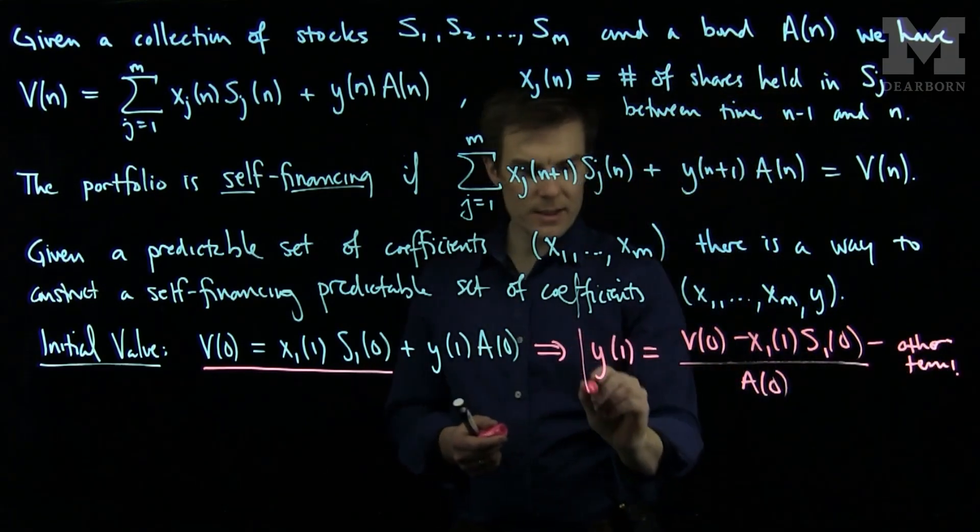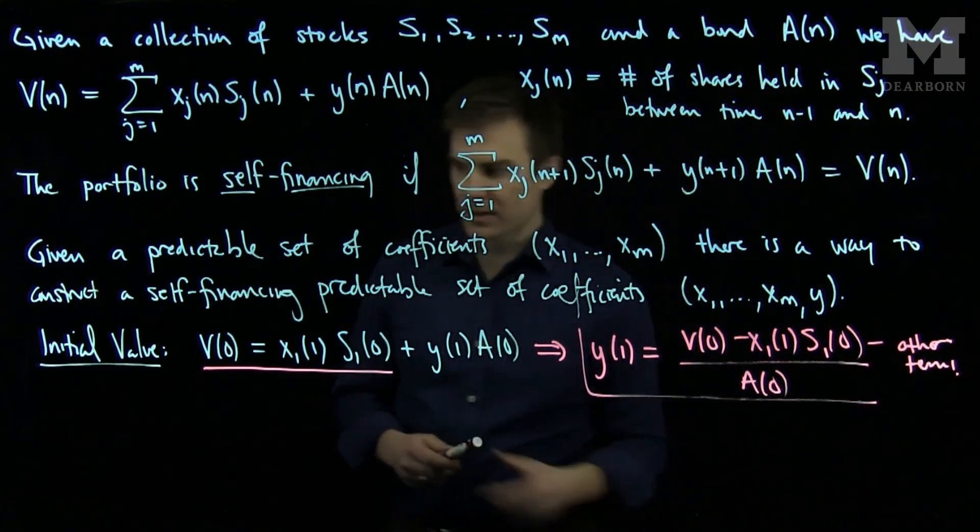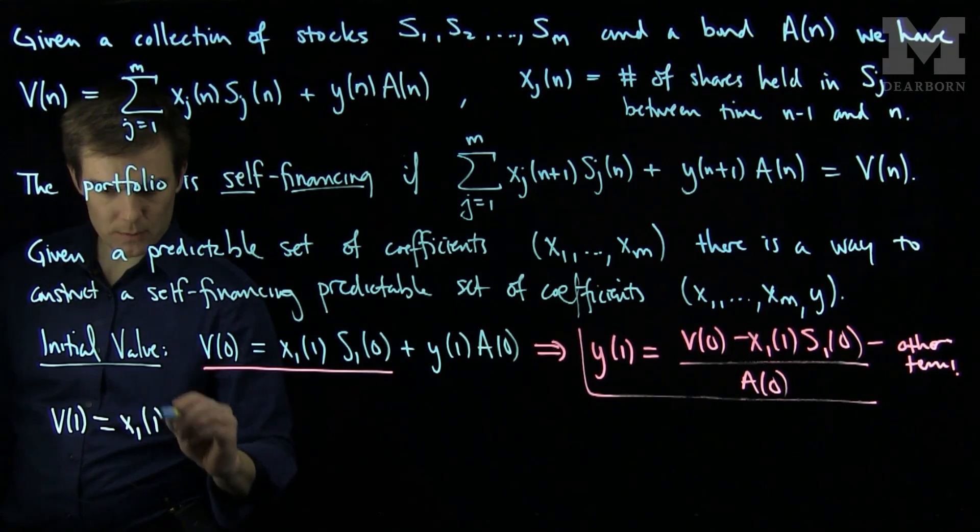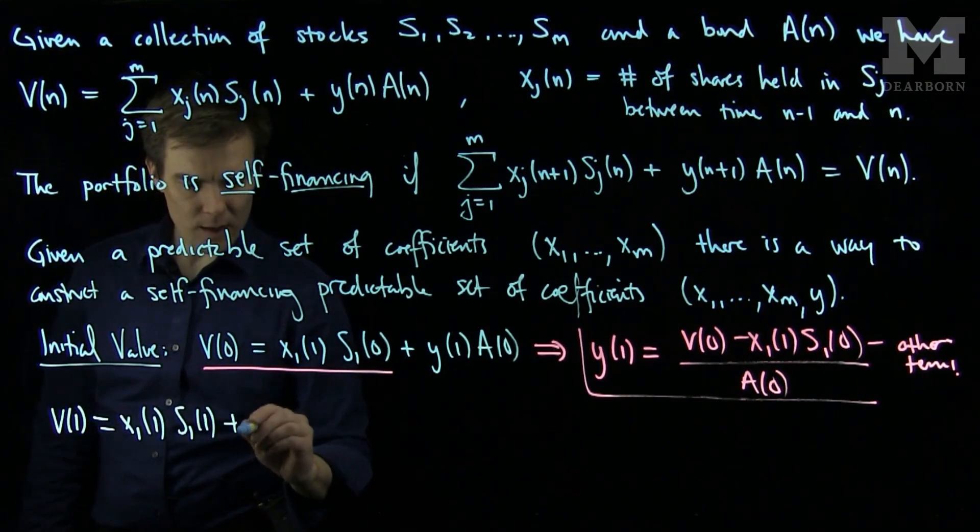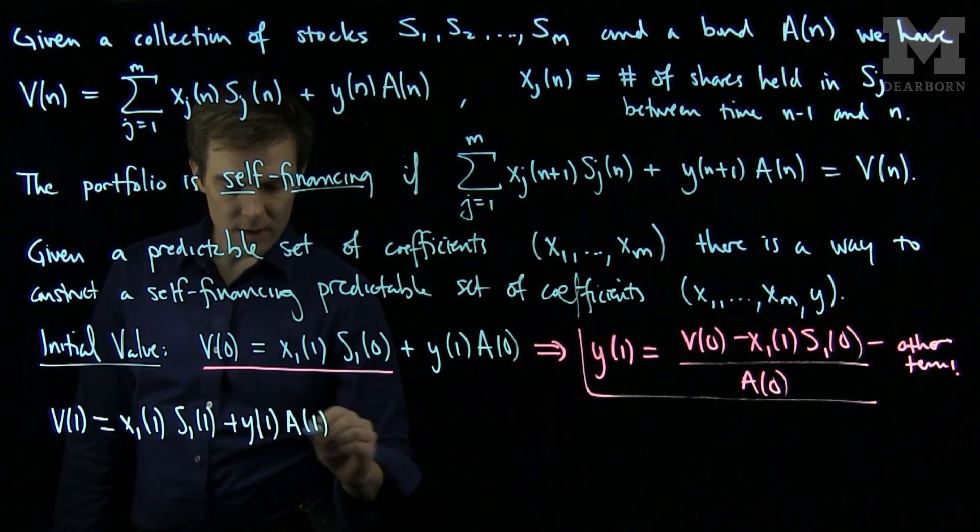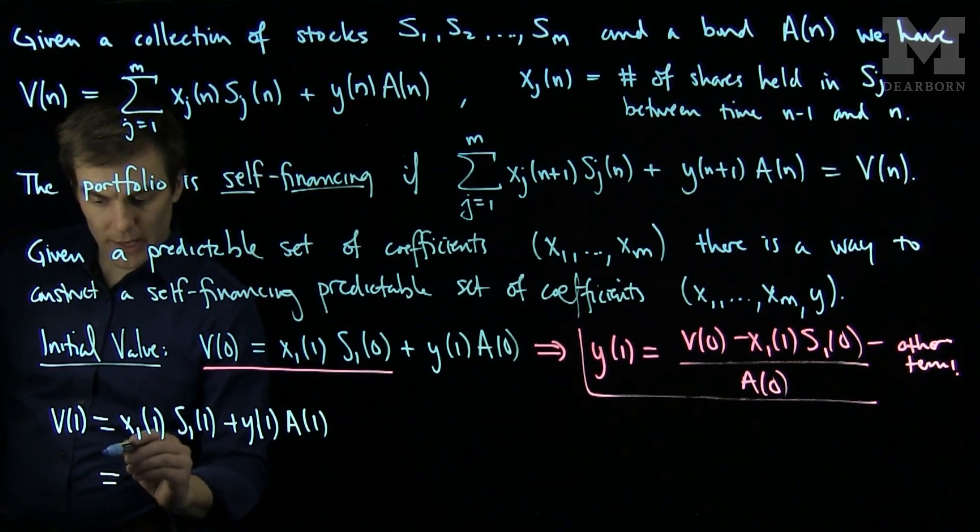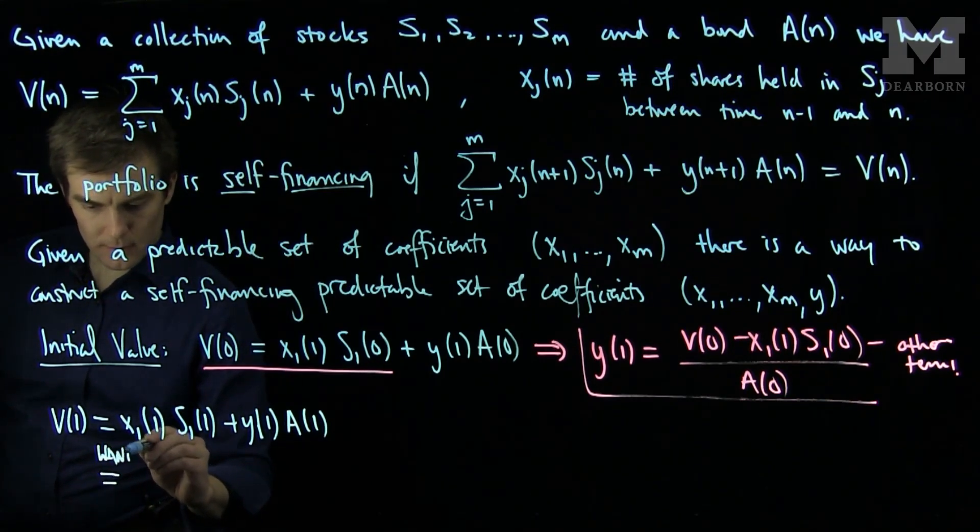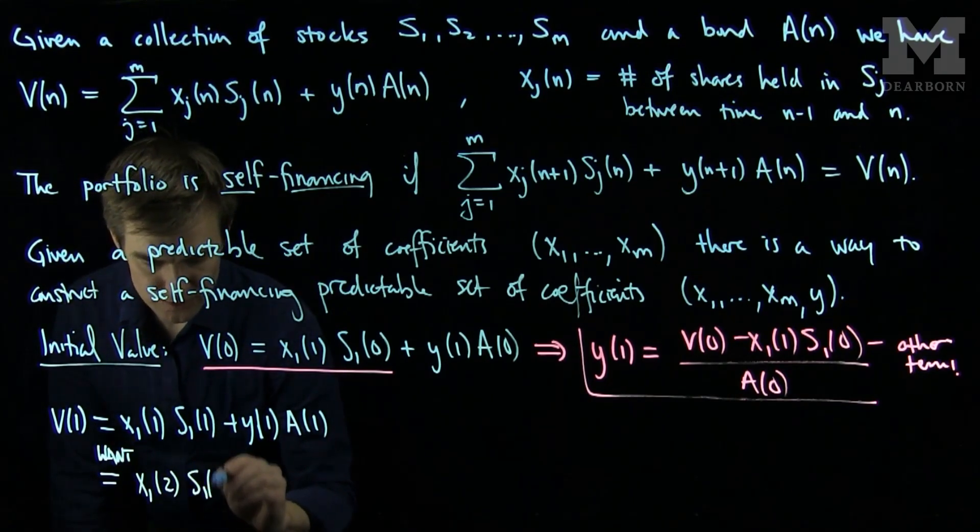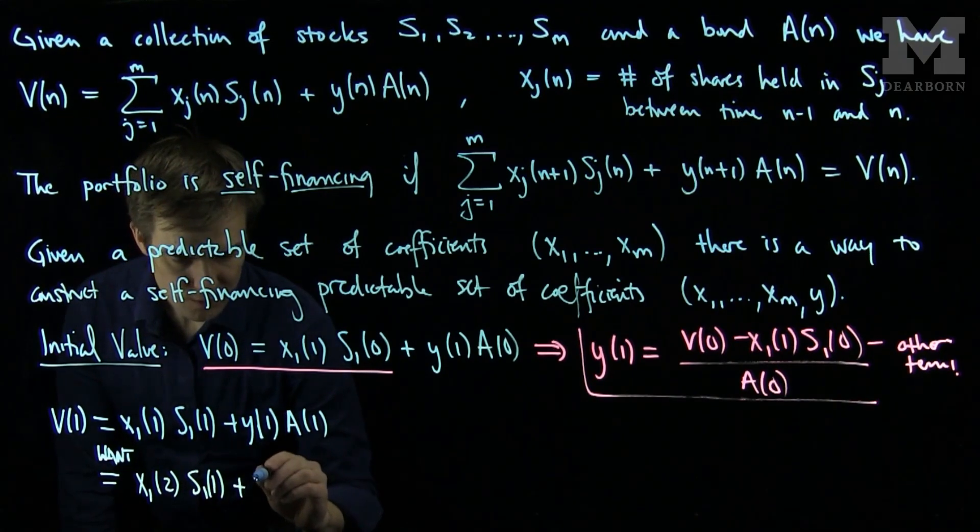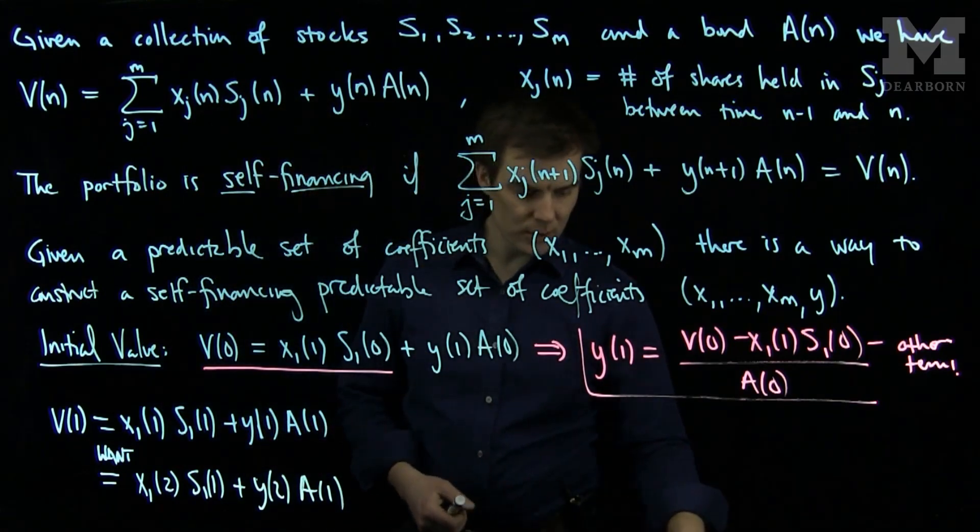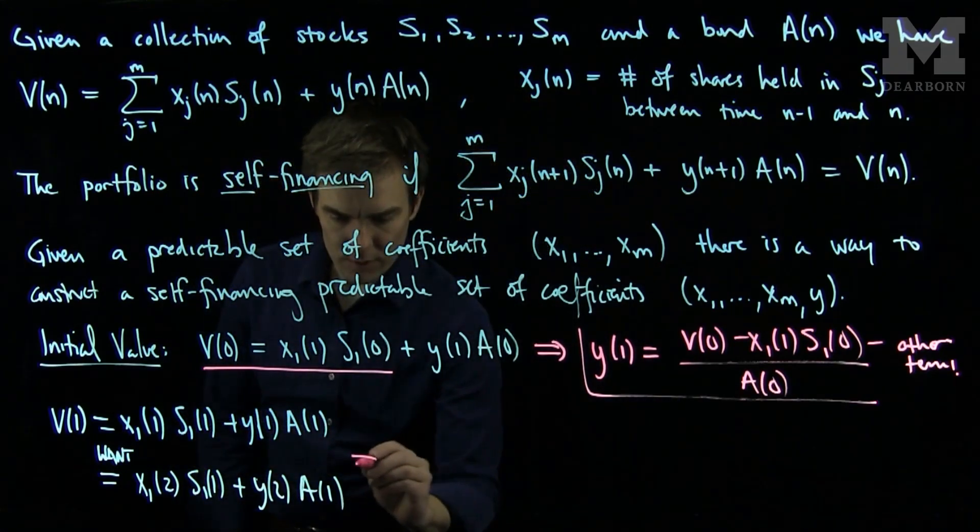We can set this to be our value of Y1 and then we can say our value of V(1) will therefore be X1(1) S1(1) plus Y1 A(1). And we would like this to be X1(2) S1(1) plus Y2 A(1). From this representation we can now solve for Y2.